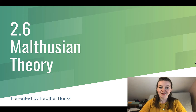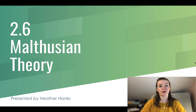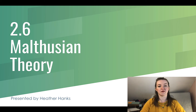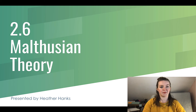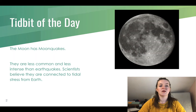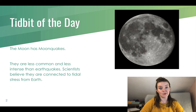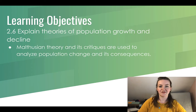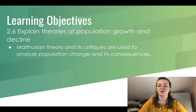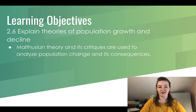Hi everyone, today we're looking at 2.6 Malthusian Theory. Our tidbit of the day is that the moon actually has moonquakes. Our learning objective for today is 2.6: explain theories of population growth and decline.